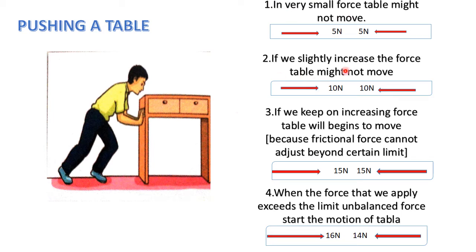If we slightly increase the force to 10 Newtons, in that moment the table still does not move. The floor exerts 10 Newtons opposite to our applied force, so frictional force is 10 Newtons and the table does not move. That is still static friction — because static friction means there is no relative motion even though a force is applied.